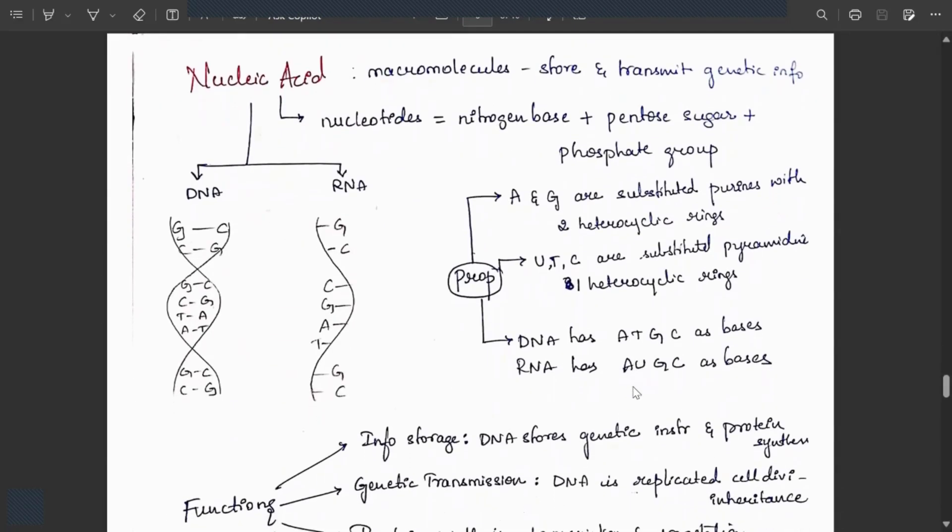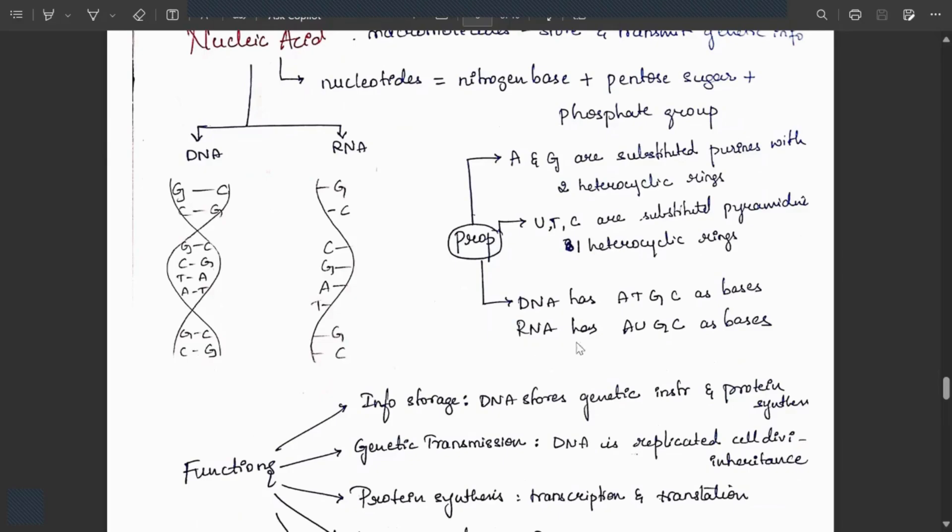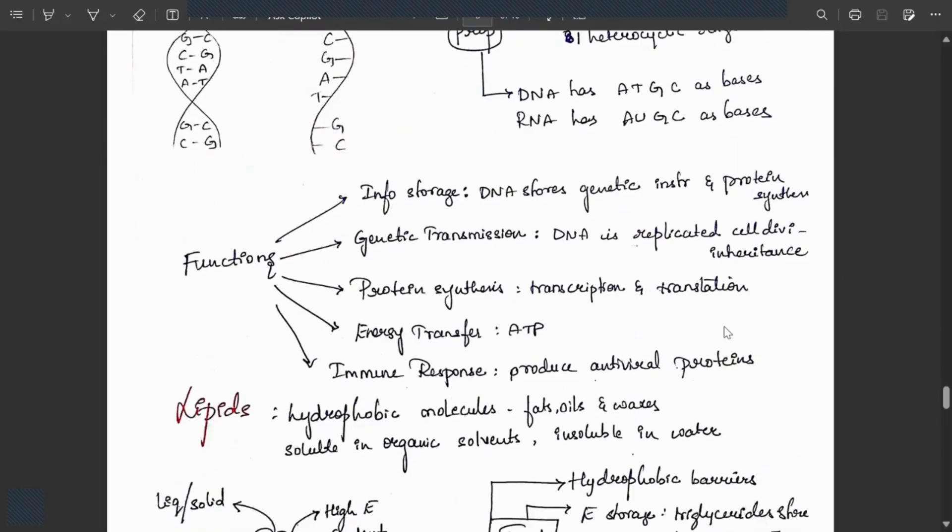Nucleic acids: macromolecules that store and transmit genetic information, made up of nucleotides. Nucleotides comprise nitrogen base plus pentose sugar plus phosphate. Nucleic acids are DNA, deoxyribonucleic acid, and RNA, ribonucleic acid. Adenine and guanine are substituted purines with two heterocyclic rings. Thymine and cytosine are substituted pyrimidines with one heterocyclic ring. DNA has ATGC as bases. RNA has AUGC as bases.